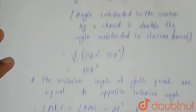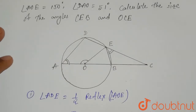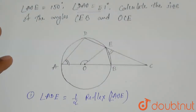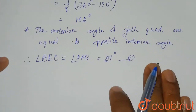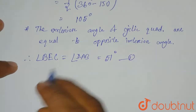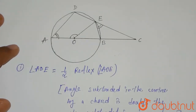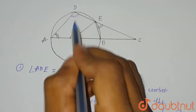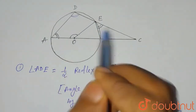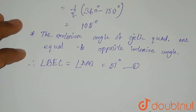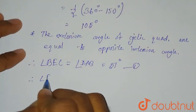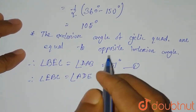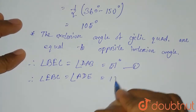That is the first answer. Note that DAO means the same as DAB — it is the same angle. Similarly, angle EBC is the opposite interior angle of the cyclic quadrilateral, so angle EBC equals angle ADE, which equals 105 degrees.